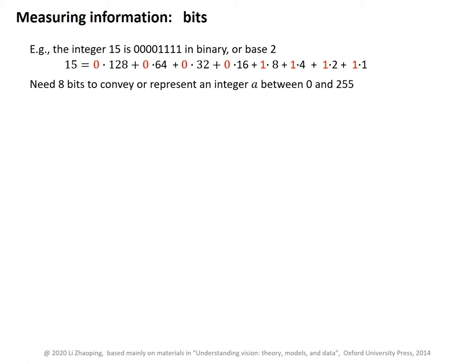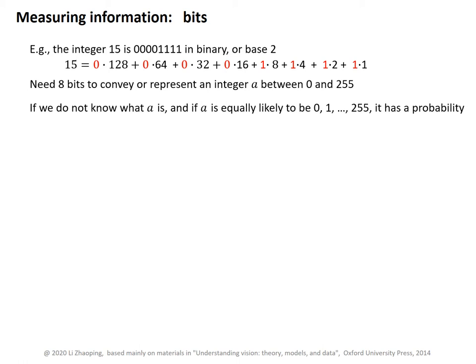Each bit is for one of these red binary digits. If we do not know what A is, and if A is equally likely to be any of the 256 possible integers, then the probability for it to be each integer value is 1 out of 256. If we take log base 2 of this probability and take its negative, the result is equal to 8, and we say it is 8 bits.